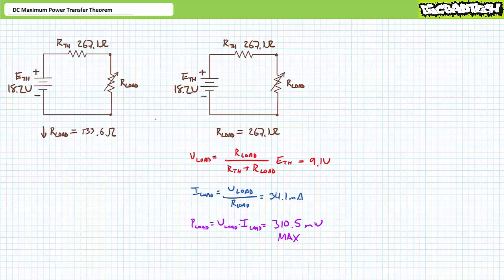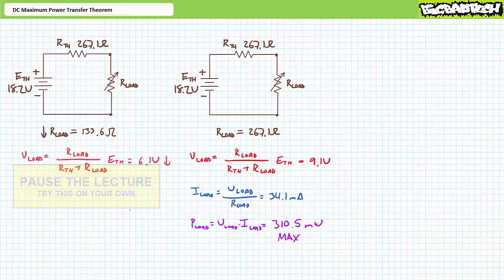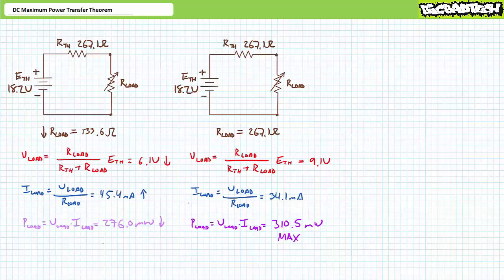Let's dial our load down to 133.6 ohms — half the Thevenin's equivalent resistance — and perform the same analysis. Applying the voltage divider rule, the load resistor experiences a reduced 6.1-volt drop. Ohm's law gives a current of 45.4 milliamps through the load. The power equation shows the load dissipates 276 milliwatts — less than maximum power conditions. In these reduced resistance conditions, our load draws more current but drops less voltage, and therefore dissipates less power.